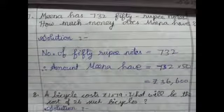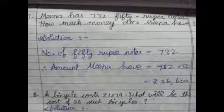7th question. Meera has 732 fifty rupees notes. How much money does Meera have? That's a question. Solution is: number of 50 rupees notes is equal to 732. Therefore, amount Meera have is equal to 732 multiply by 50.